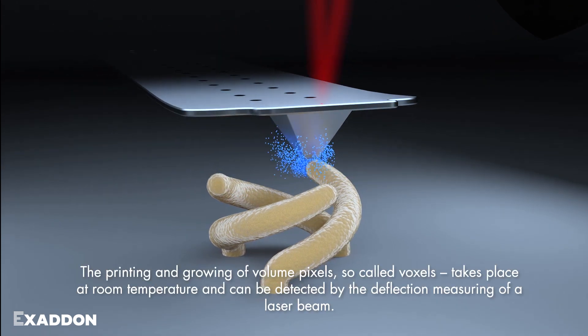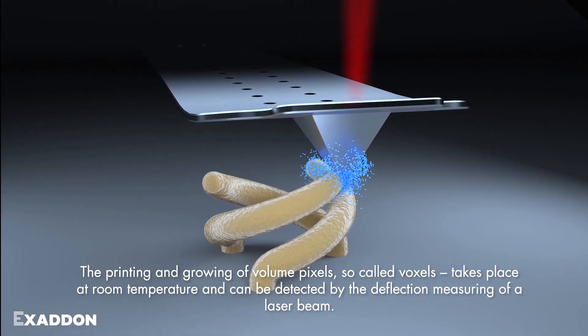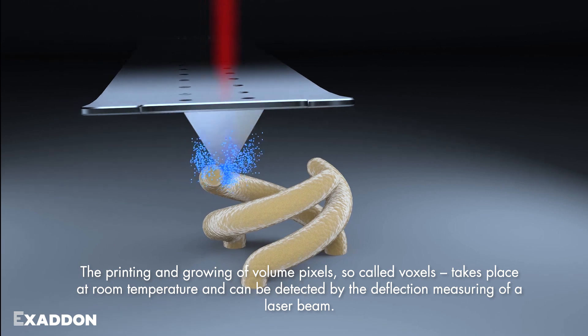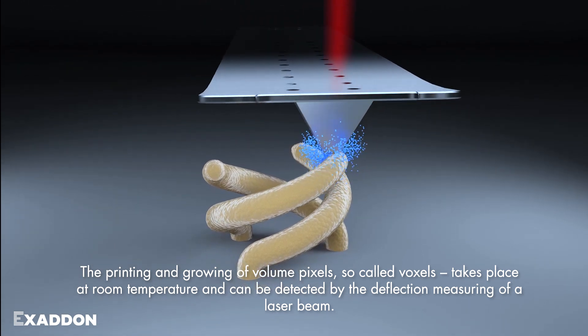The printing and growing of volume pixels, so-called voxels, takes place at room temperature and can be detected by the deflection measuring of a laser beam.